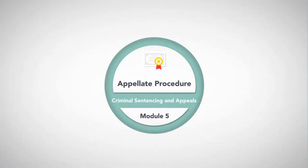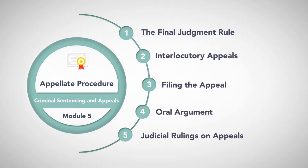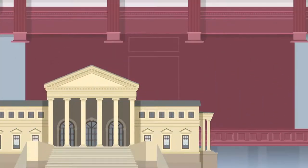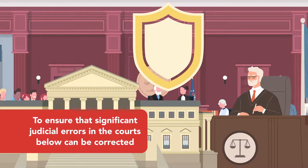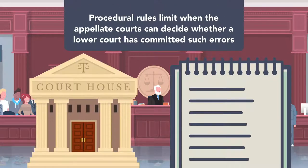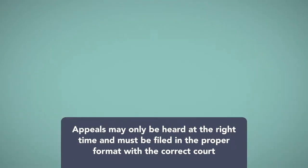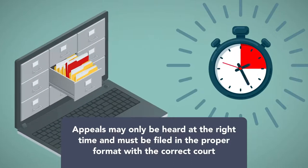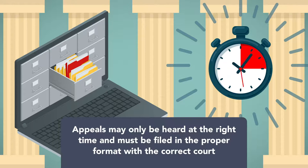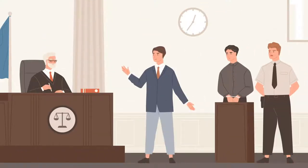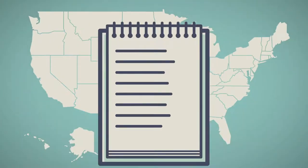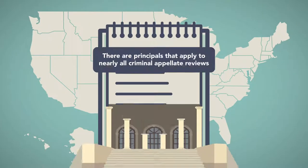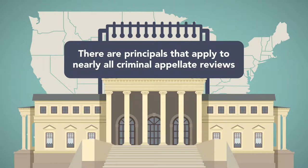Module 5: Appellate Procedure. The appellate courts have fundamentally different roles than do trial courts. They serve as safeguards to ensure that significant judicial errors in the courts below can be corrected. However, procedural rules limit when the appellate courts can decide whether a lower court has committed such errors. Appeals may only be heard at the right time and must be filed in the proper format with the correct court. While appellate procedural rules vary from jurisdiction to jurisdiction, there are principles that apply to nearly all criminal appellate reviews.